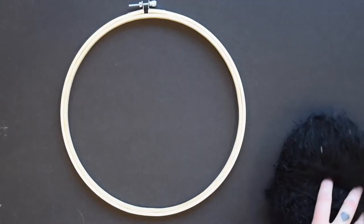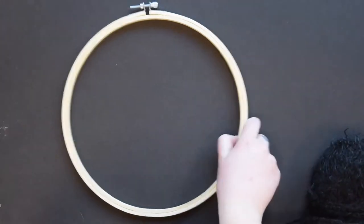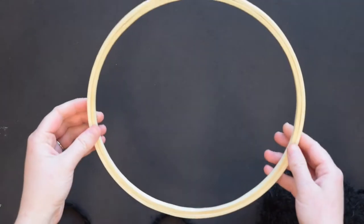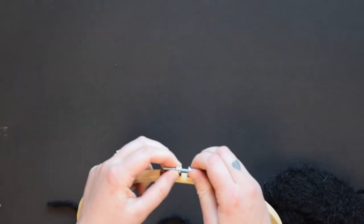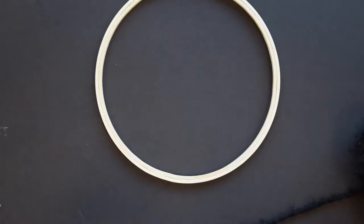To start this craft, I'm going to first take my hoop and we want to keep both hoops together. We're just going to tighten it so they don't come loose, and I'm going to give myself pretty long leeway for my yarn.